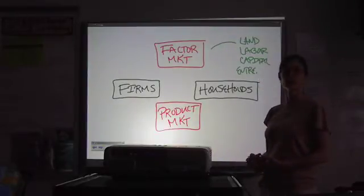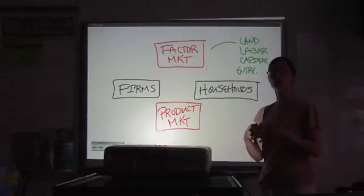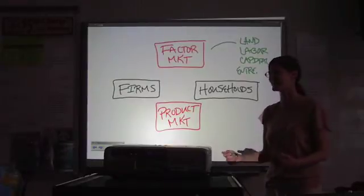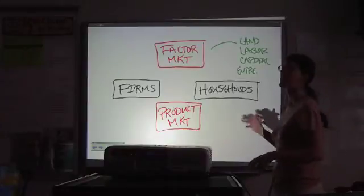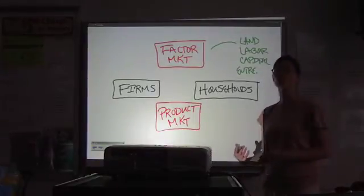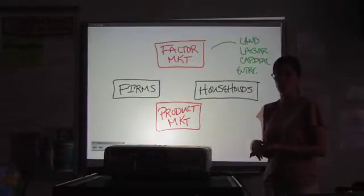Land, labor, capital, and entrepreneurship. Land would be any natural resource. Labor is human work. If you have an animal that's doing something for you, that's not labor. That's land. Labor is human work, human effort. Capital is machines that are used in production. And entrepreneurship is the brain power to coordinate all the other resources to make a profit.